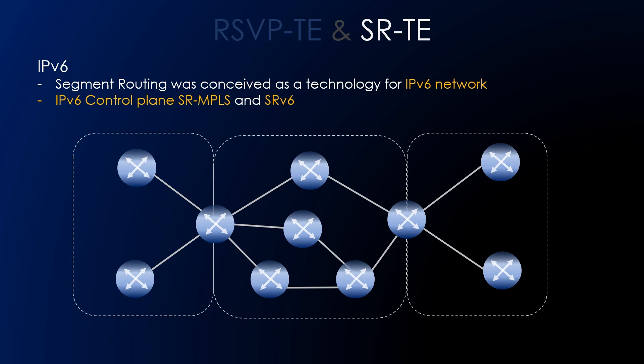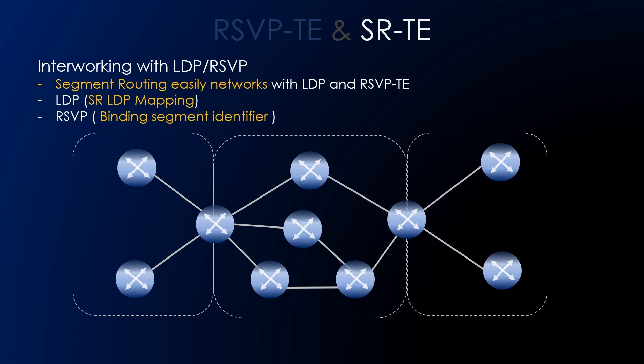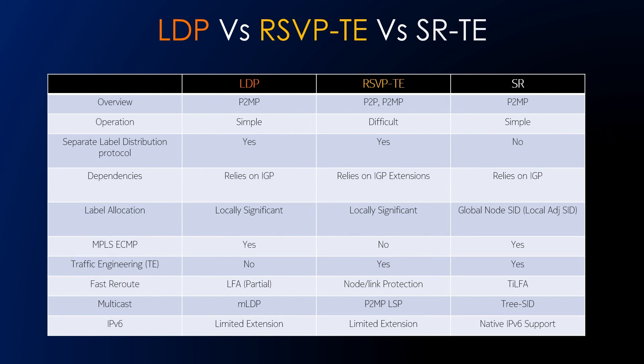We have two flavors to deploy segment routing: one is an IPv6 control plane with segment routing MPLS, and the other is SRv6. For interworking with LDP and RSVP, segment routing needs an SR-LDP mapping in case of LDP islands when connecting to them. Whenever there is an RSVP island with segment routing, a binding segment identifier is needed. This covers the LDP versus RSVP-TE versus segment routing overview.